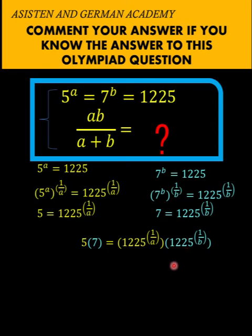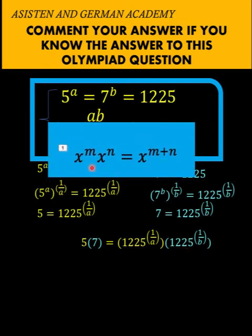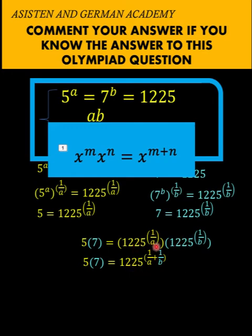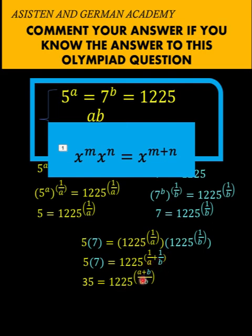Notice that 1225 is a common base. Recall that when you have x raised to m times x raised to n with the same base, you copy the common base and add the exponents. So we copy the common base 1225 and add 1 over a plus 1 over b. The product 5 times 7 is 35, and 1 over a plus 1 over b simplifies to a plus b over ab.